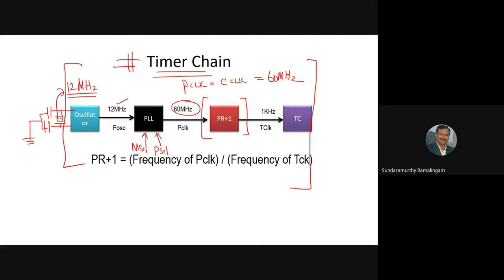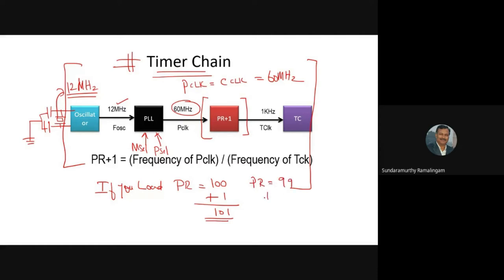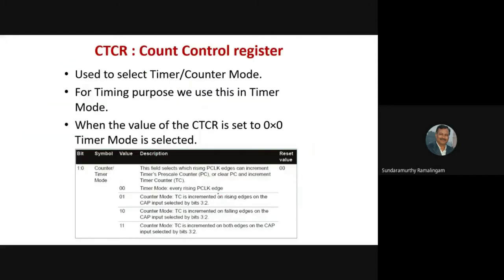The plus-one is represented here because whatever value you load into the pre-scalar register, the processor adds one to it to prevent a divide-by-zero error. So if you load pre-scalar with 100, the processor adds one making it 101. If you want the total value to be 100, you must load 99 into the pre-scalar register.